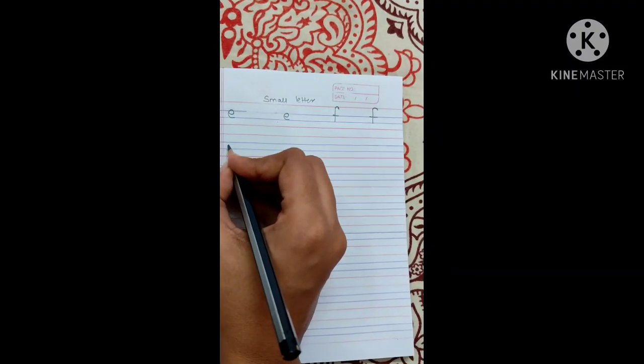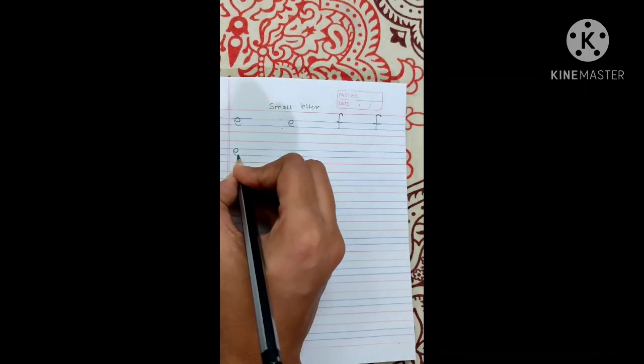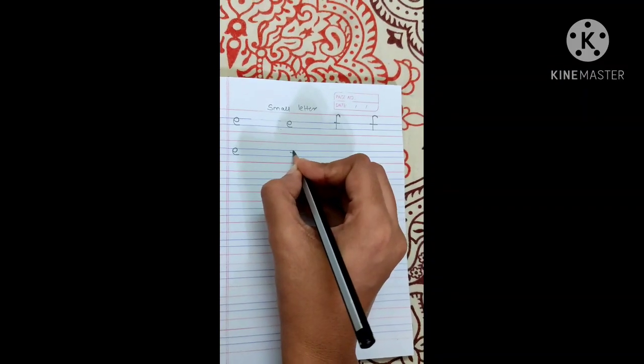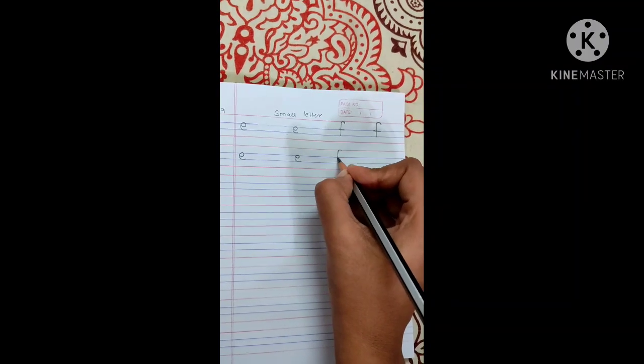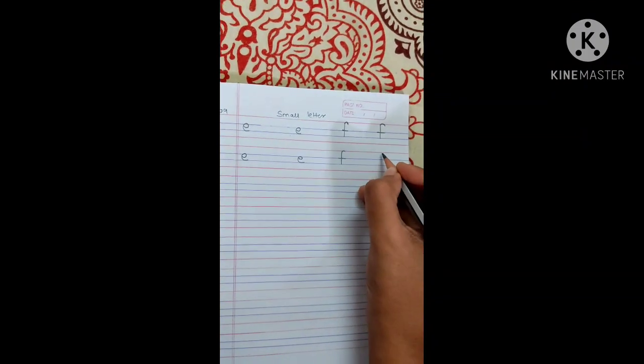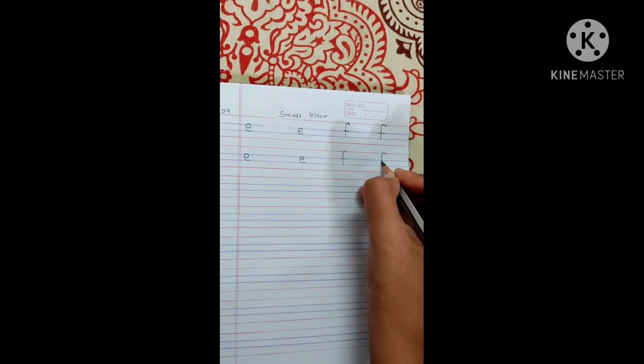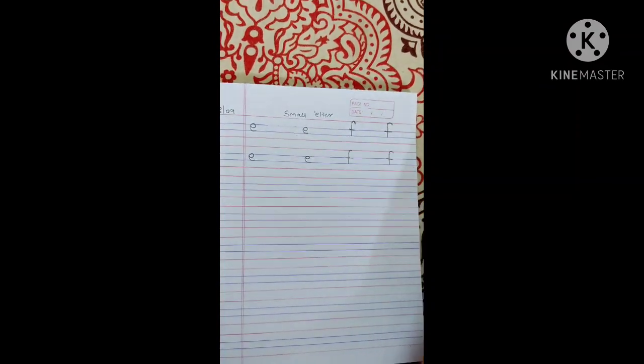Again we are going to write e. E, e, f, f. Okay.